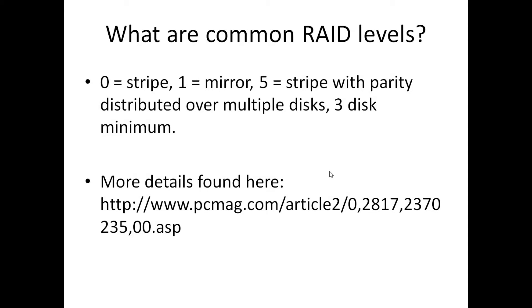Common RAID levels — this is a super common interview question. You should really know them all, but at least the most common ones. You need to tell the difference between a stripe and a mirror and why they are important. Your stripe is for performance and your mirror is for safety and backup. There are also mixed RAID levels containing a combination of both. RAID 5 is another common one — it's a stripe with parity over multiple disks and has a three-disk minimum.